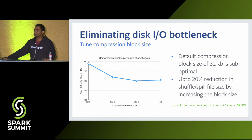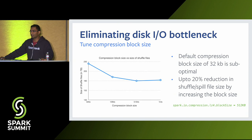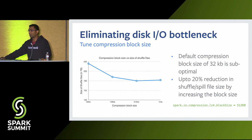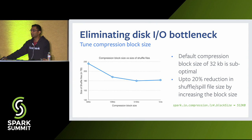The third part of disk I/O tuning is compression block size tuning. The default compression size used by Spark is suboptimal, and you can cut down the size of the shuffle and spill output by as much as 20% by increasing the block size for compression from 32 KB to 512 KB.